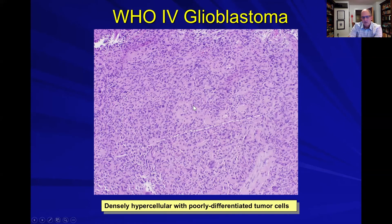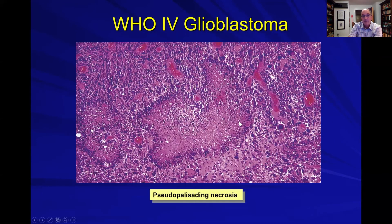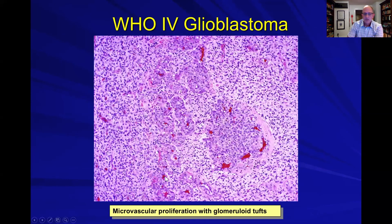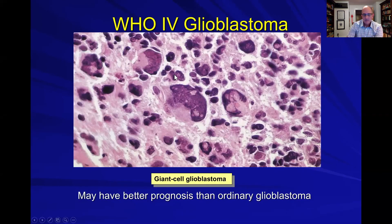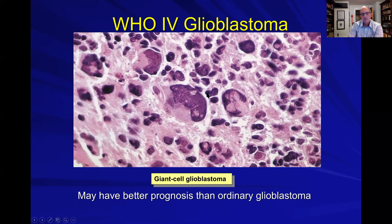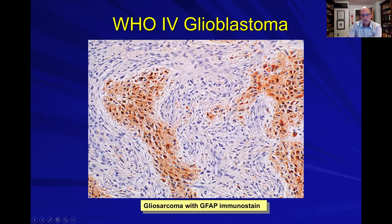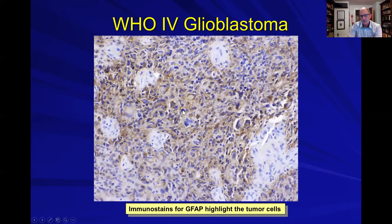On histology, cells are much more dense and pleomorphic. Here's a good example of the classic pseudopalisating necrosis, and here you can see the characteristic hypervascularity. Sometimes these tumors have unusual cell types — for example, giant cell glioblastoma, which has large, unusual, multinucleated giant cells. Interestingly, if you diagnose that subtype, the prognosis is a little bit better than for the general glioblastoma population. These aggressive tumors can also undergo sarcomatous transformation. GFAP is positive but more variable — not quite as dense as in more differentiated gliomas.